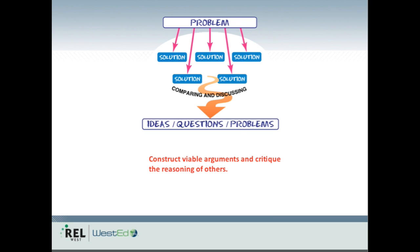The process of comparing and discussing different solutions is called neriage in Japanese, and it's a very important part of Japanese mathematics instruction. Problems like this and neriage give students opportunities to construct viable arguments and critique the reasoning of others, which is one of the math practice standards. Here's a diagram that illustrates the process of neriage, which shows various different solutions coming up from students, the comparing and discussing process, and that leads to new ideas and questions for problems that students might have.